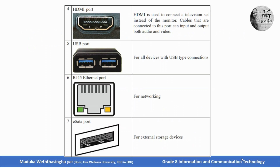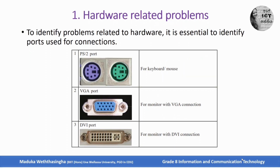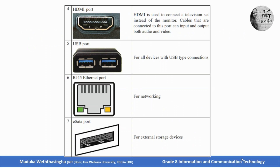Cables connected to the HDMI port can input and output both audio and video. By using the HDMI port, you can connect monitors and projectors. You can also use VGA and DVI ports to connect the monitor, but there is a difference. When we use VGA ports, we can only transmit video. But when we connect via HDMI, we can transmit both audio and video.